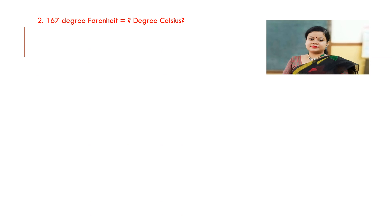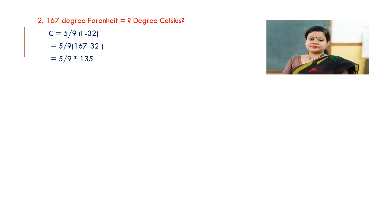We will do two more. Given: 167 degree Fahrenheit is equal to what degree Celsius? The formula is C = 5/9 × (F − 32). Putting F = 167, after simplification the result is 75. So 167 degree Fahrenheit equals 75 degree Celsius.